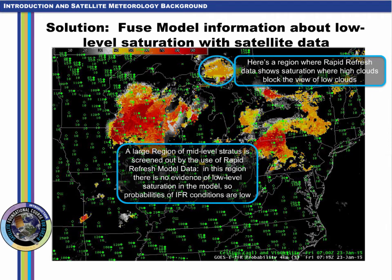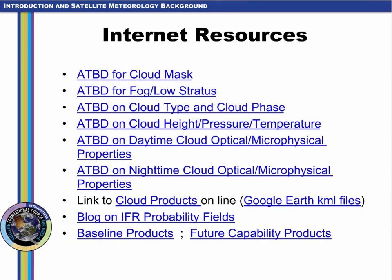Brightness temperature difference fields cannot detect low clouds in the presence of cirrus because the emissivity differences of the low clouds aren't apparent to the satellite if cirrus is blocking the view. In those cases — an example of which is north of Sault Ste. Marie, Michigan — model data can provide information about low-level saturation even when satellite data are incomplete, and alert a forecaster to the potential presence of reduced visibility. IFR probability is not a baseline product, but it is a future capability product. A list of all baseline and future capability products is available at the link on this page, along with supplemental links for more in-depth information.